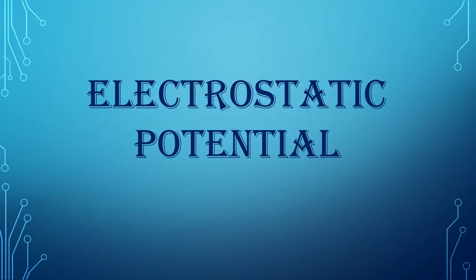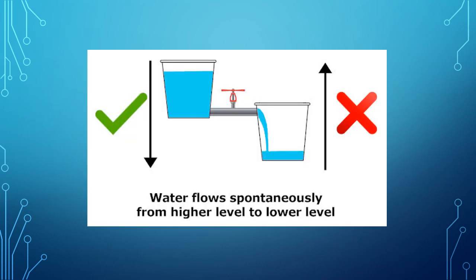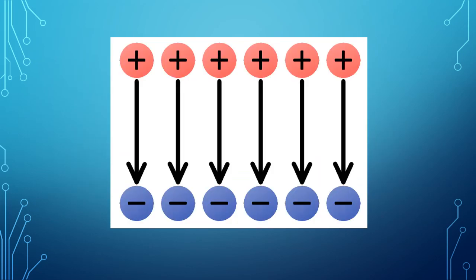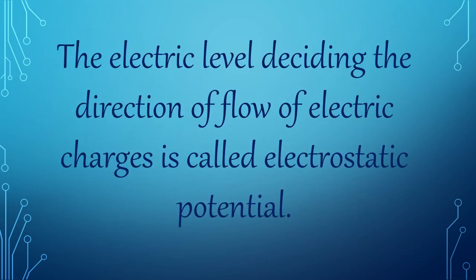The next one is electrostatic potential. Water or a liquid flows from a higher level to a lower level. Heat always flows from a body at higher temperature to a body at lower temperature. Similarly, there is a tendency of the positive charge to flow from a point of higher electric potential to a point of lower electric potential. This electric level deciding the direction of flow of electric charges is called electrostatic potential.